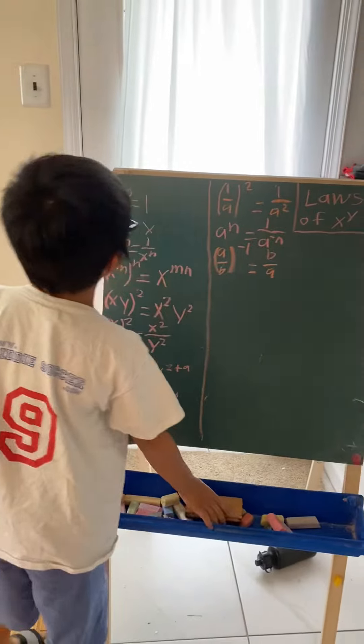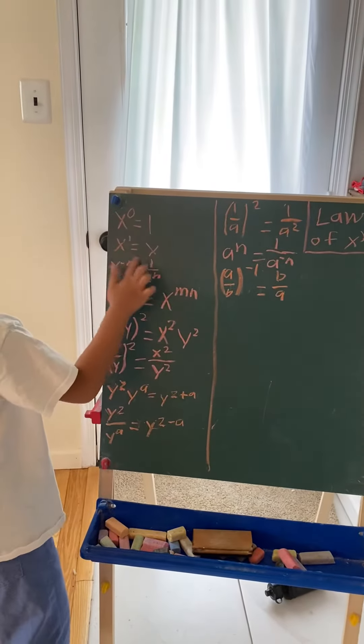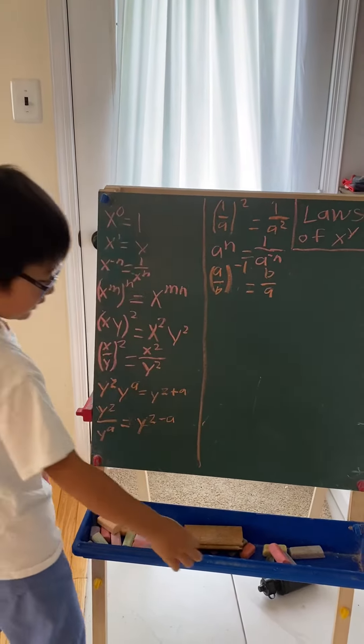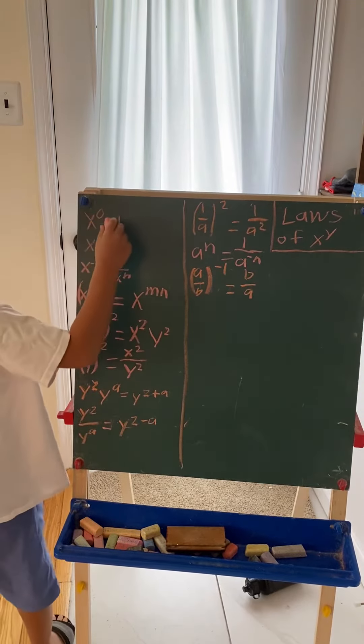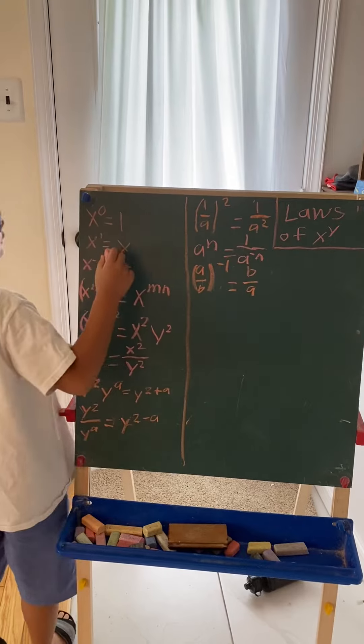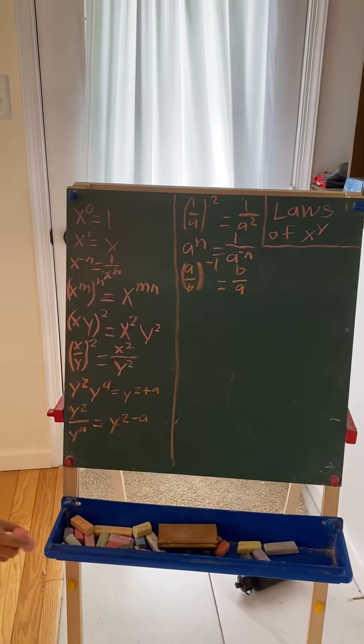Okay, first let's look at the first two rules. x to the zero power is 1, and x to the first power is just x.